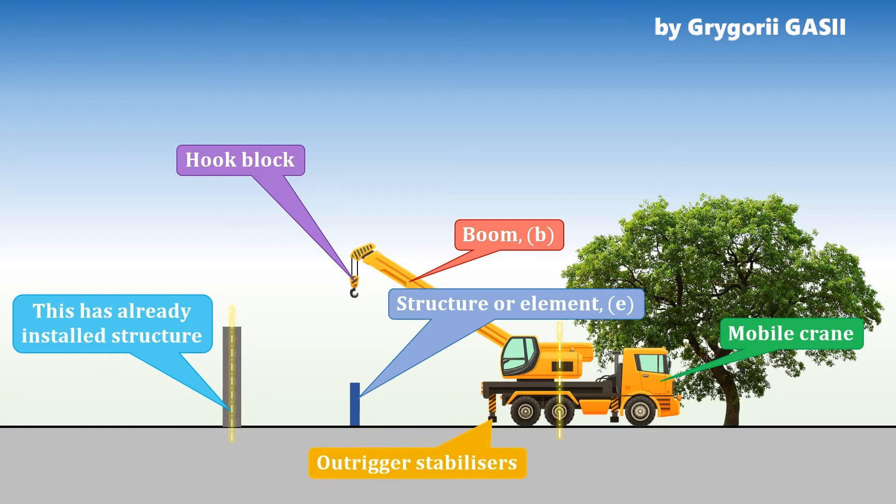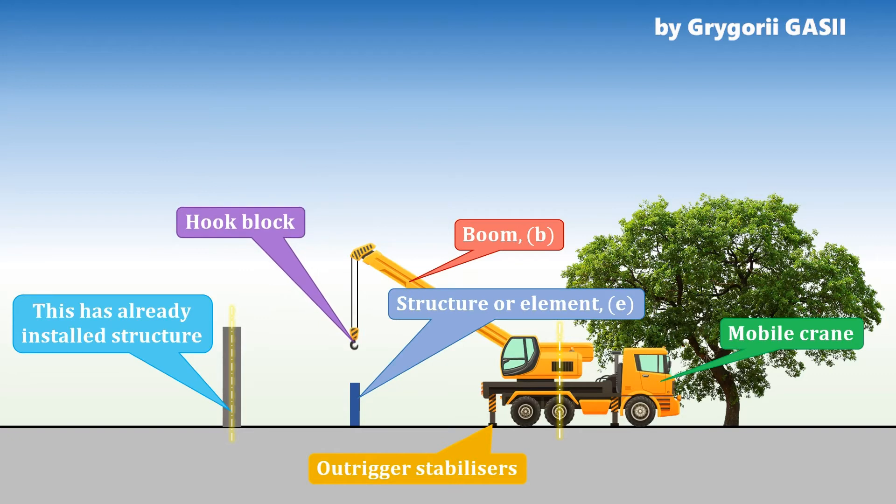Please note the outrigger stabilizers are lowering, as well as the hook block is lowering. There is a single or multiple folds of rotor hook block. It is a crane sling.